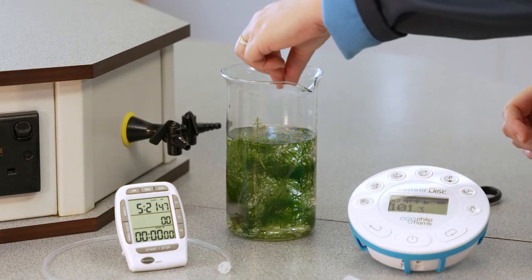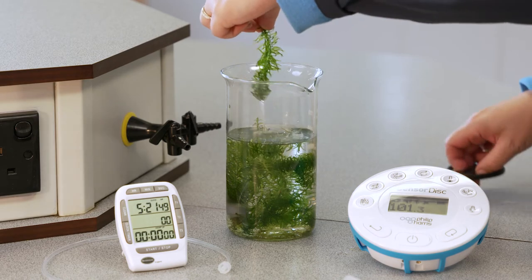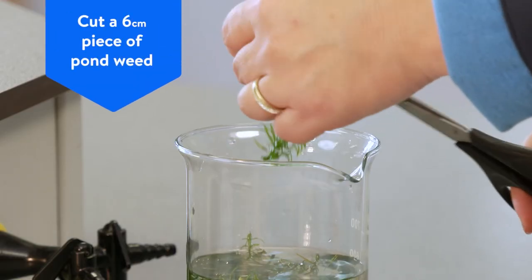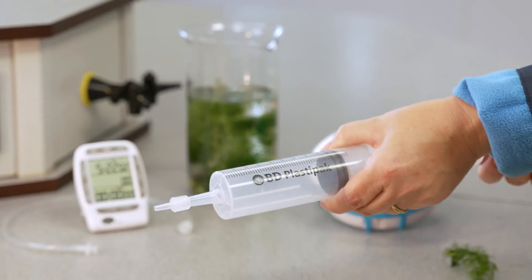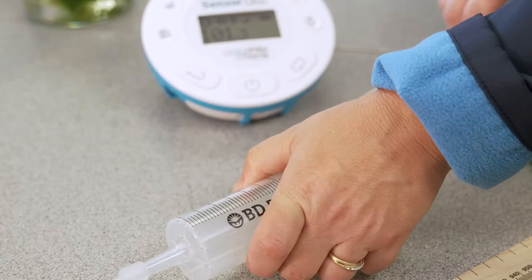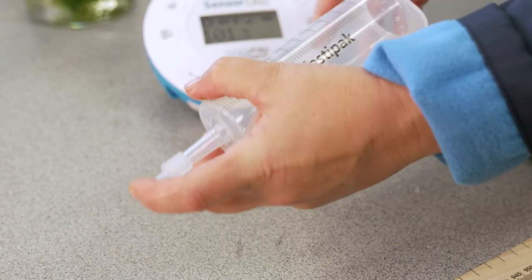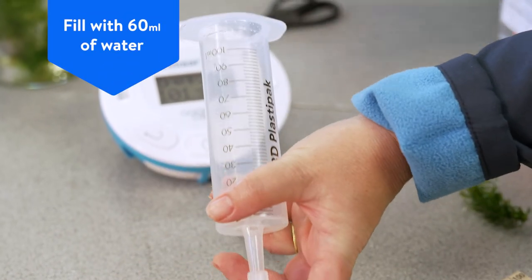With the sensor disk set up, begin the experiment by cutting a six centimeter piece of pondweed. Take the piston out of the barrel of the syringe. Place your finger over the tip of the syringe and fill the barrel with 60 milliliters of water.